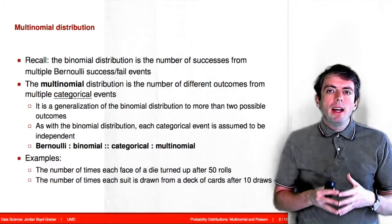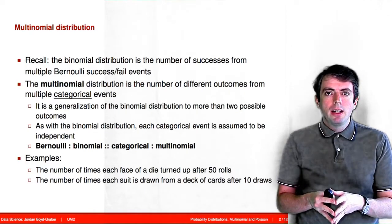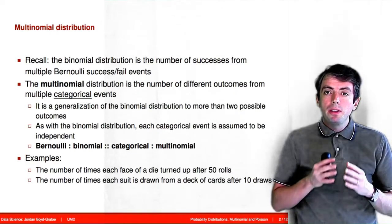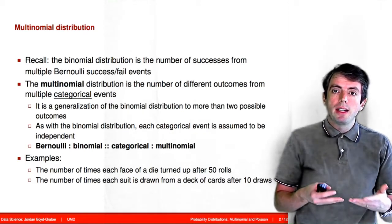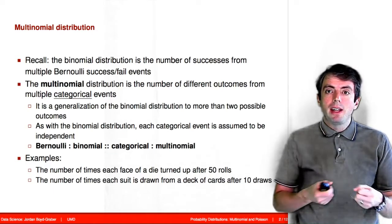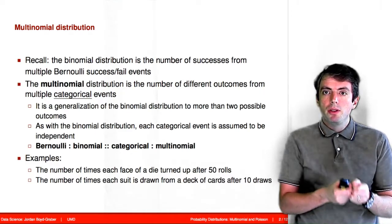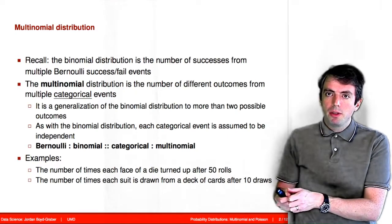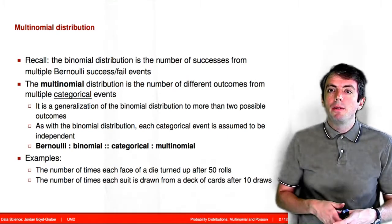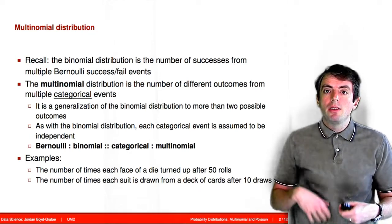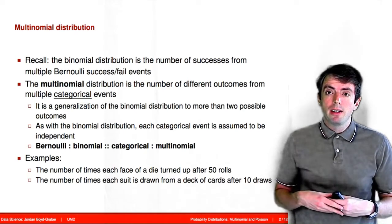Recall that we extended the Bernoulli distribution into multiple trials into the binomial distribution. We're going to do the same thing with the categorical distribution by doing multiple trials from a categorical distribution to create the multinomial distribution. Two examples of things you might model with a multinomial distribution are if you draw ten cards from a deck of cards, you could model the suits, face values, or colors that you get with a multinomial distribution.